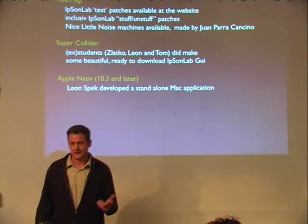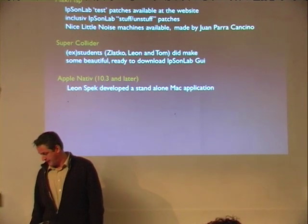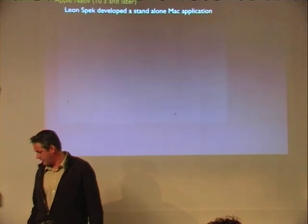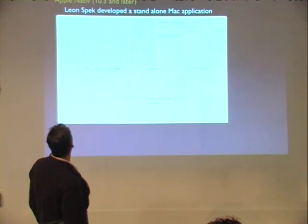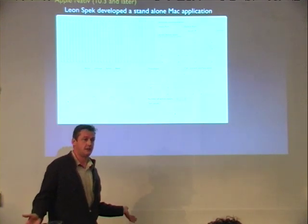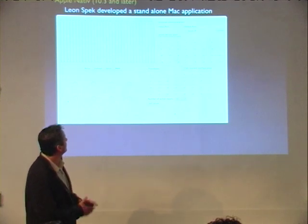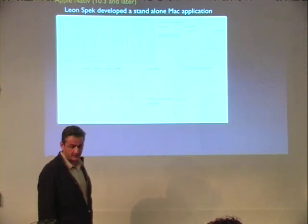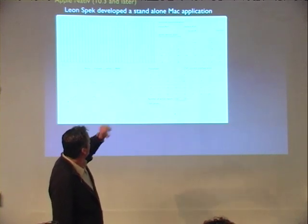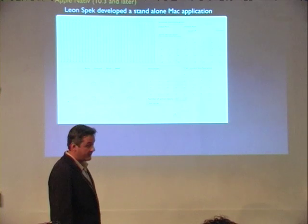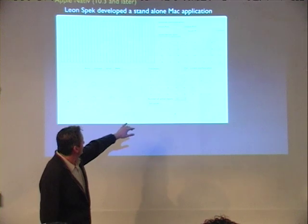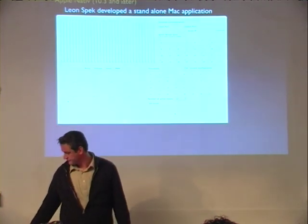Two weeks ago, Leon — a guy working for us, also a student — said, 'let's take a look,' and he made this beautiful Apple native application for the Ipsom Lab reader. I was really amazed — so we don't need any more than that. You just download this application, which is free. You can adjust the input ports, adjust other ports, and the Ipsom Lab IP — and that's basically all you can do. You can set the amount of active inputs and set the thresholds.